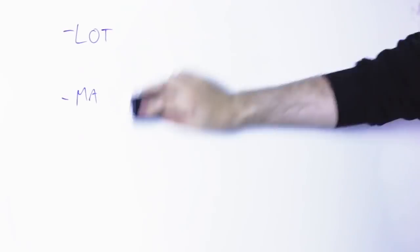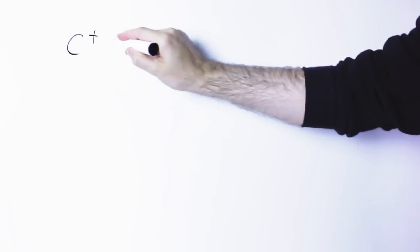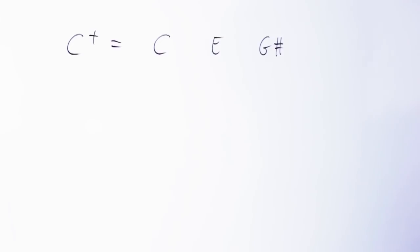So let's take a C augmented chord, the notes are C, E, G sharp. Now if I move a note of an augmented chord down a half step, I get a major chord. So for instance, if I move the G sharp down to G, I get a C major chord, C, E, G.